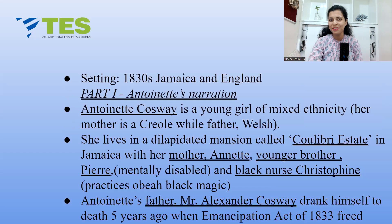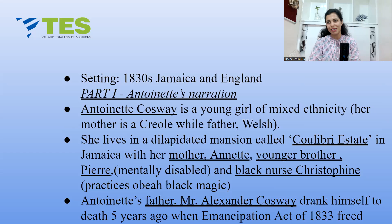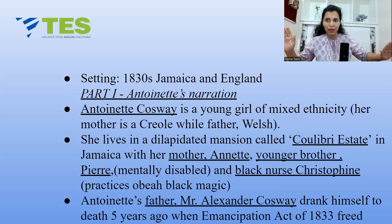The setting of this novel is 1830s Jamaica and England. There are three parts in the novel. We start with Part One, which is Antoinette's narration. Antoinette Cosway is a young girl of mixed ethnicity — her mother is a Creole, while her father is Welsh. Creoles are Europeans who are born in the Caribbean — they are white but born in the Caribbean islands.